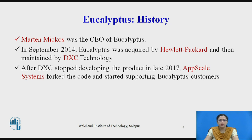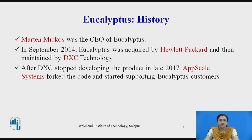Regarding the history of Eucalyptus: Martin McCaus was the CEO of Eucalyptus. In September 2014, Eucalyptus was acquired by Hewlett Packard and then maintained by DXC Technologies. After DXC stopped redeveloping the product in late 2017, AppScale Systems forked the code and started supporting Eucalyptus customers.